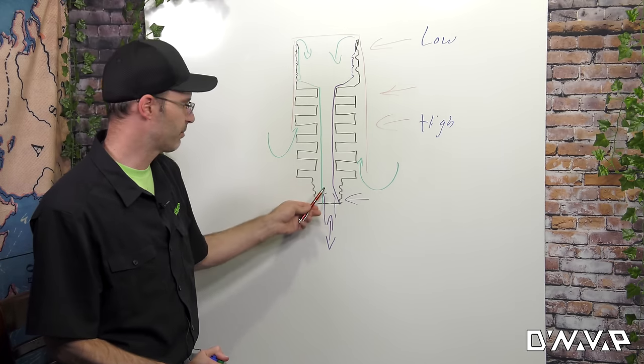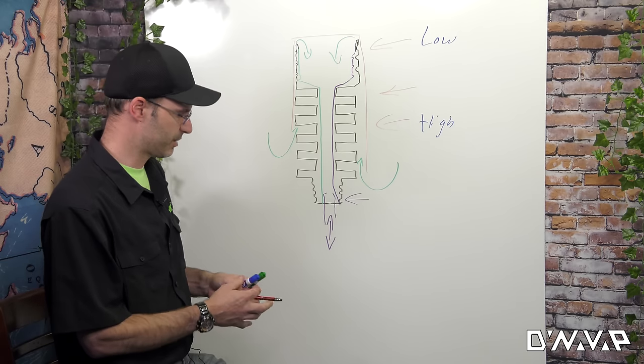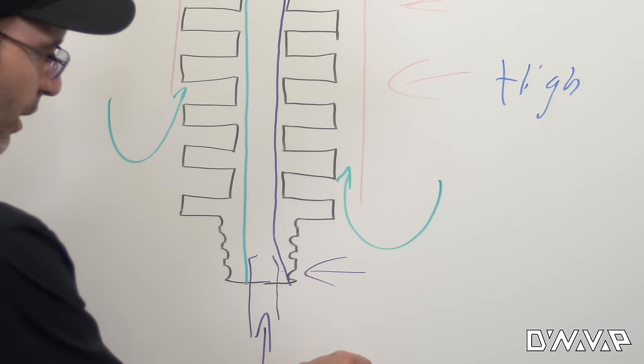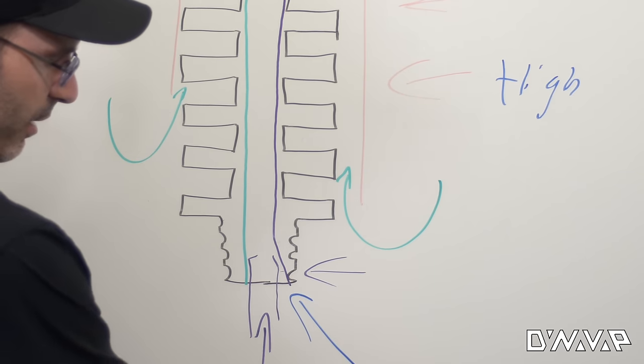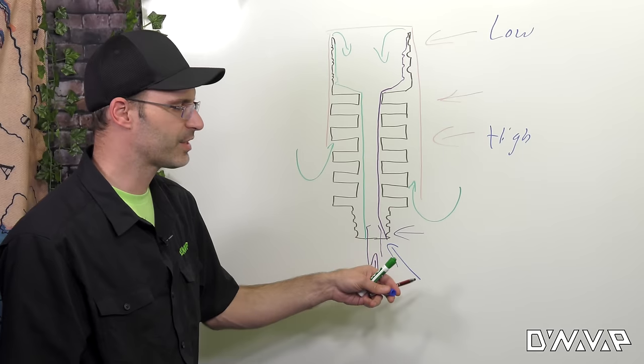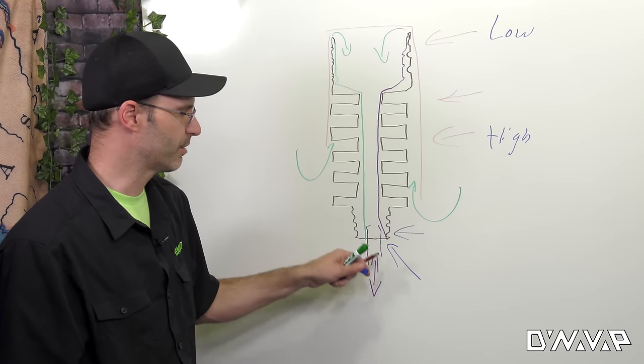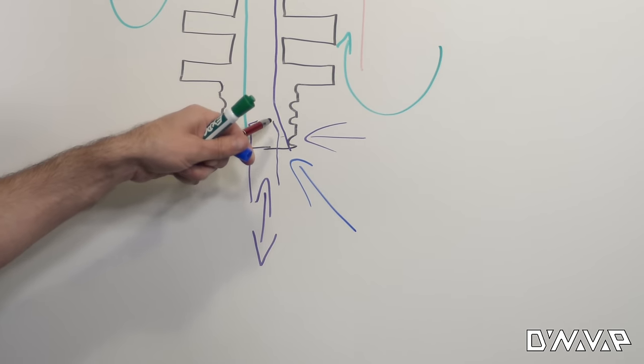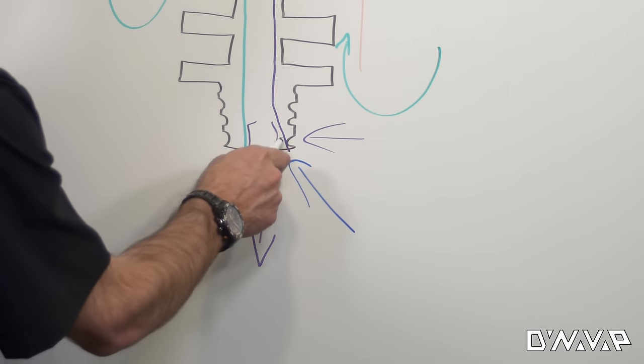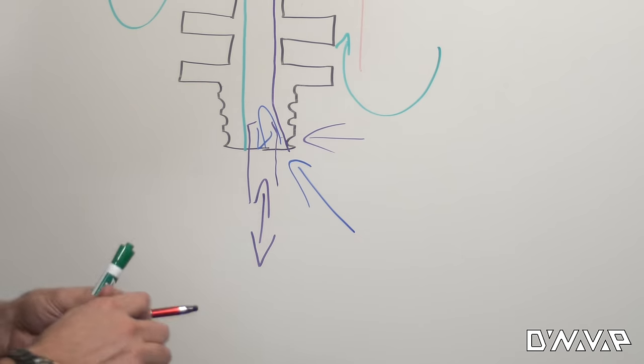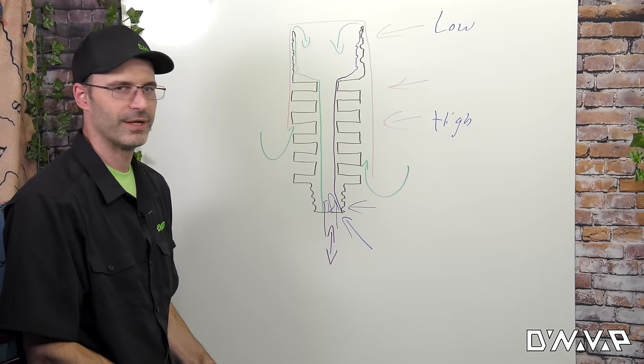The vapor then meets up with the condenser and can then mix in with cool outside air that's going to be coming between the inside of the stem or body and the outside of the condenser and mixing at this point right here, which creates a significant amount of turbulence, cools and conditions the vapor. And in general, there's the magic of the VapCap.